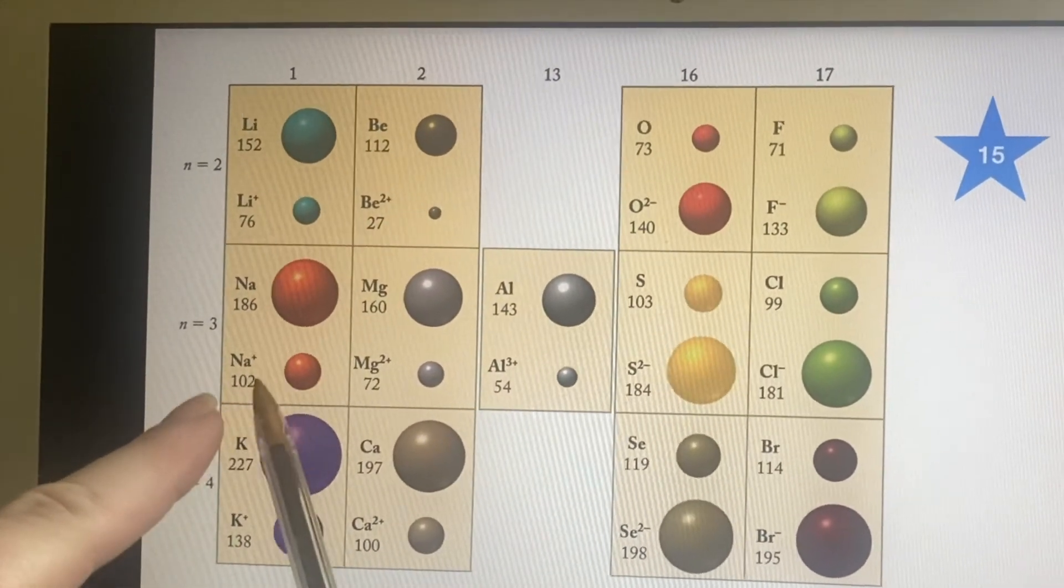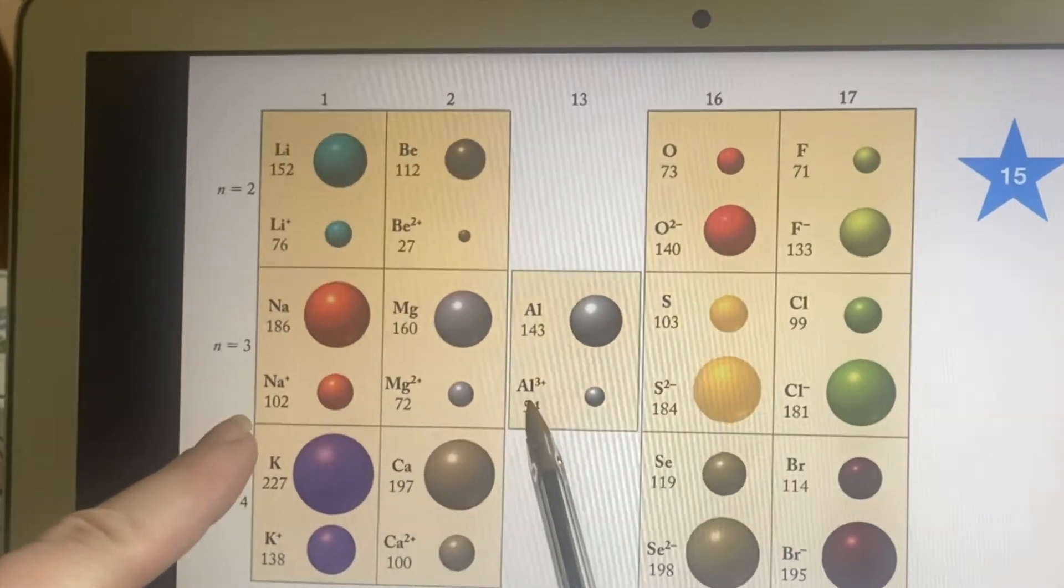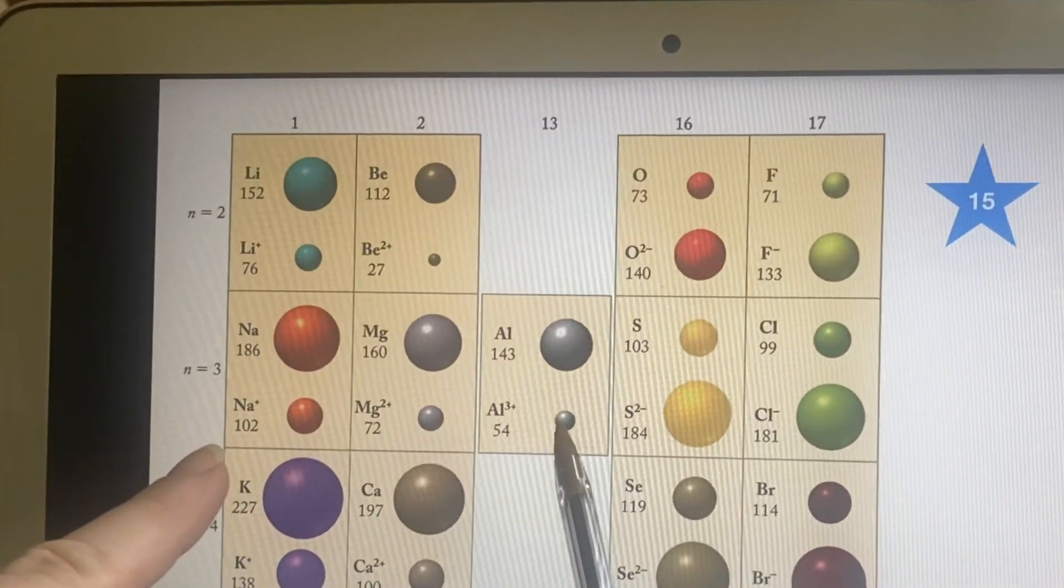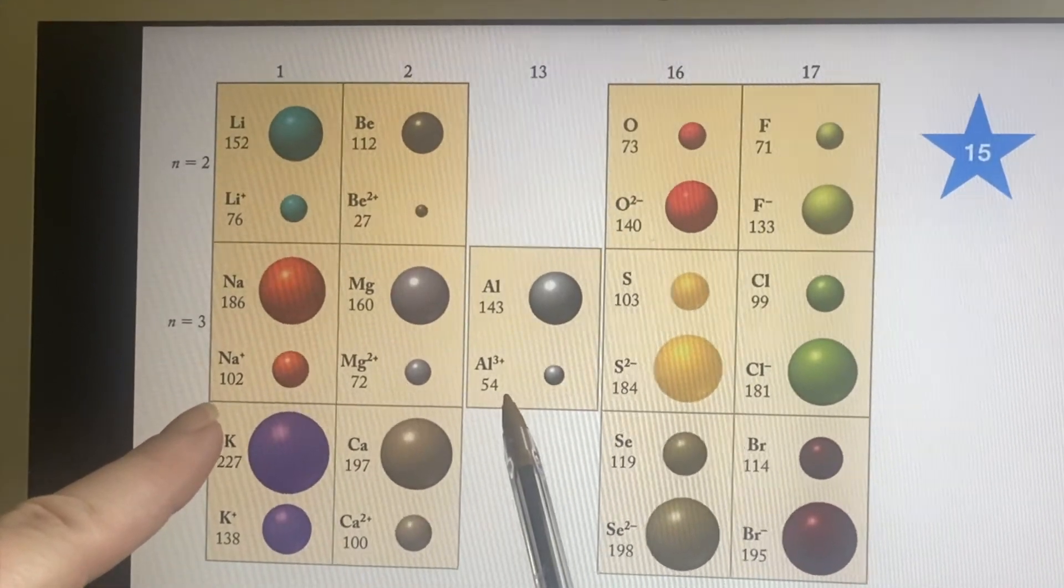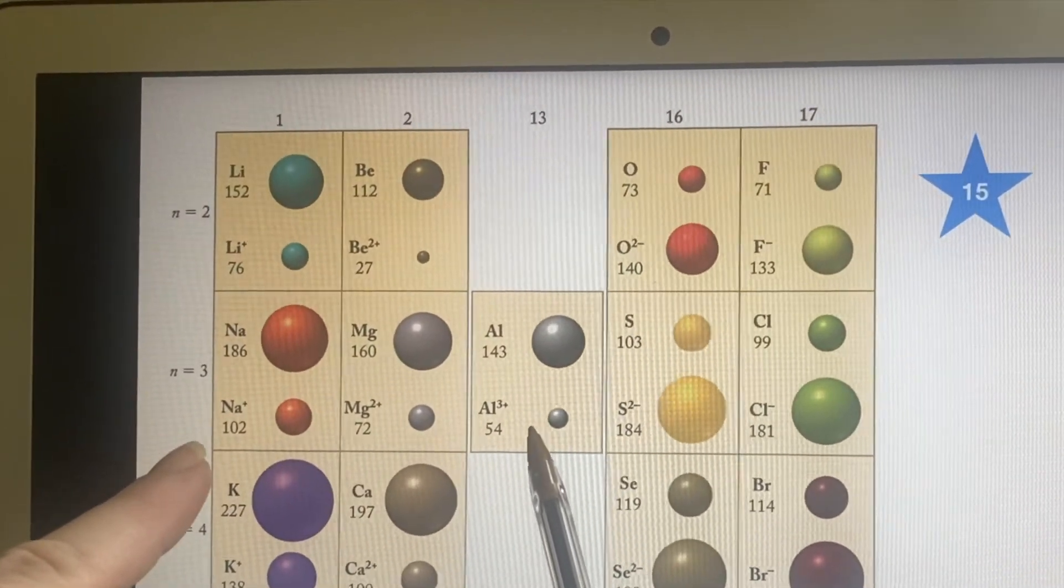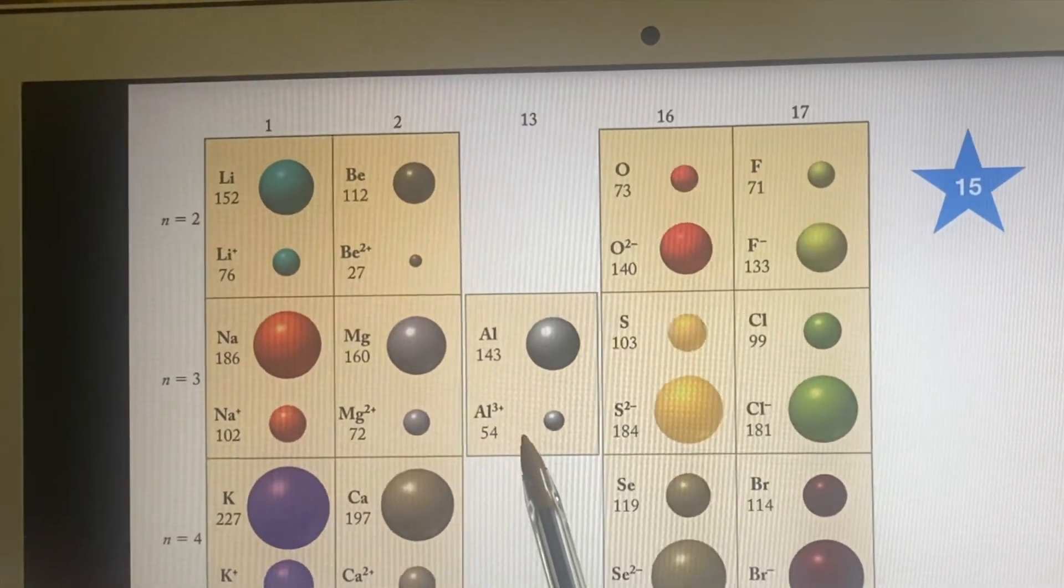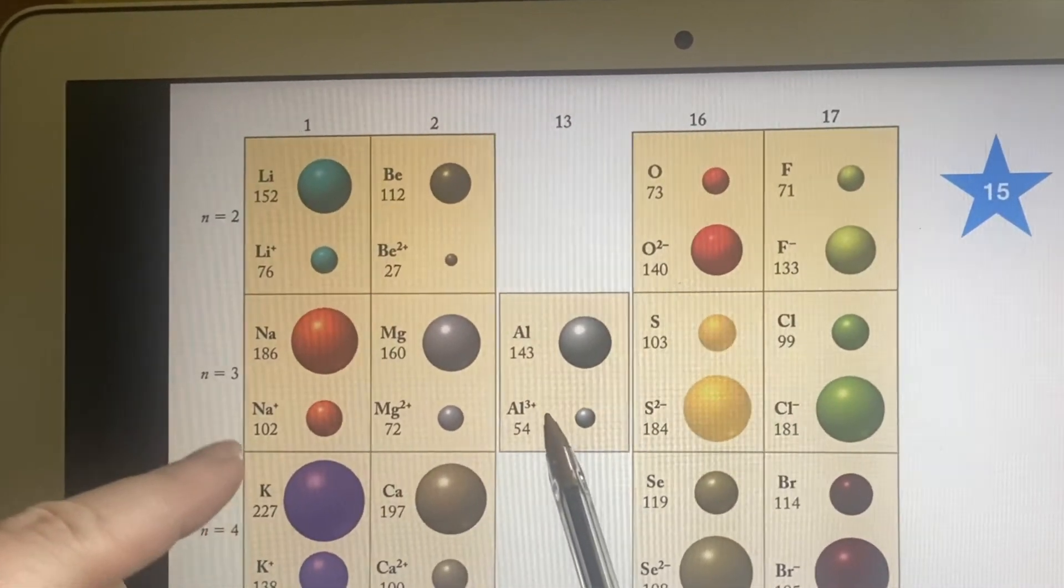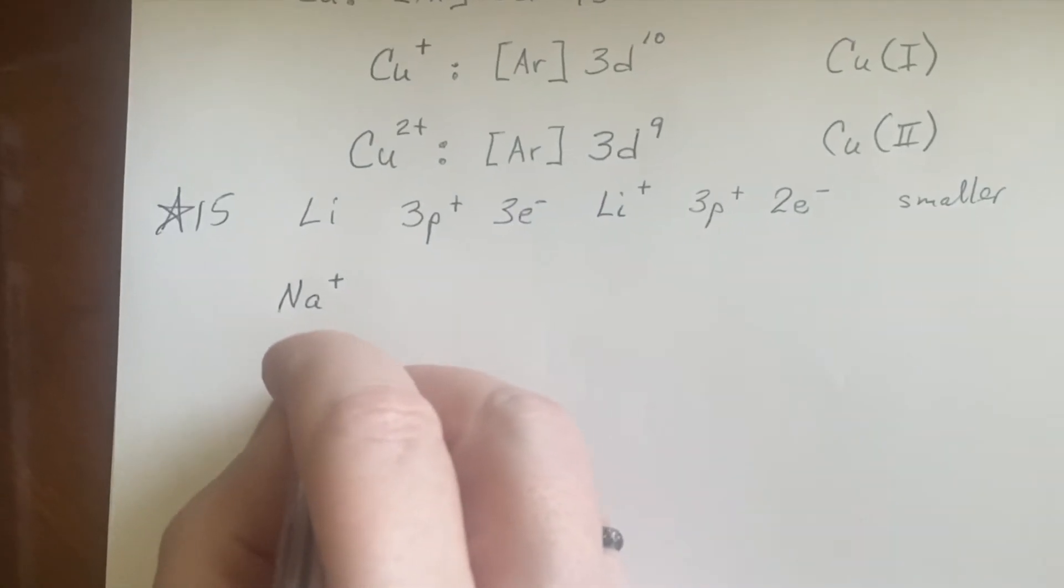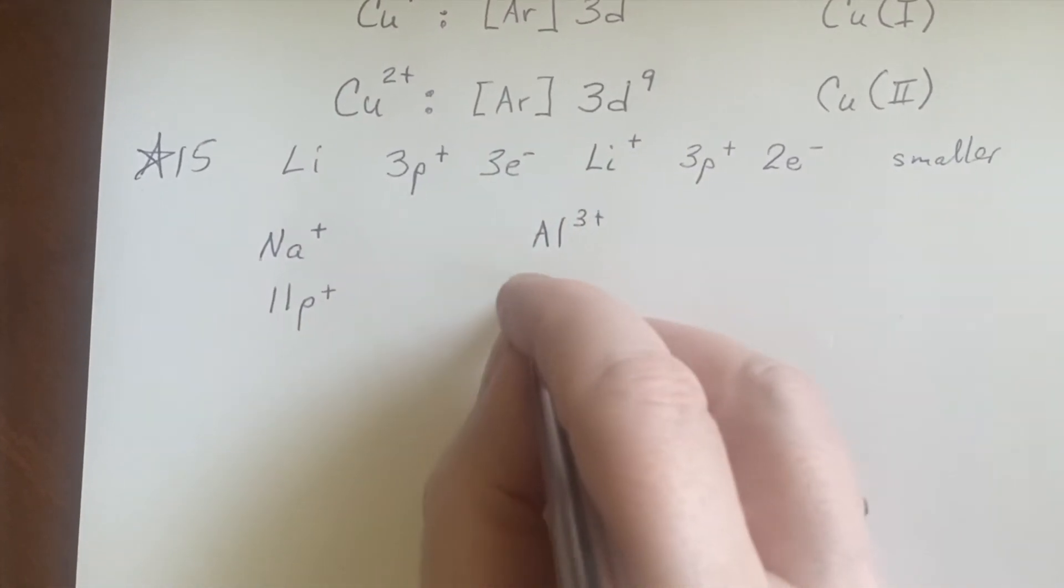We can also look at the isoelectronic thing. We can look at this sodium. So the sodium with a positive charge, that's going to be isoelectronic with neon, so would aluminum with a plus three charge. It's going to be isoelectronic with neon. They're both going to be pulling on 10 electrons—isoelectronic, right? This one's doing it with 11 protons, this one's doing it with 13 protons, and that makes it more effective.